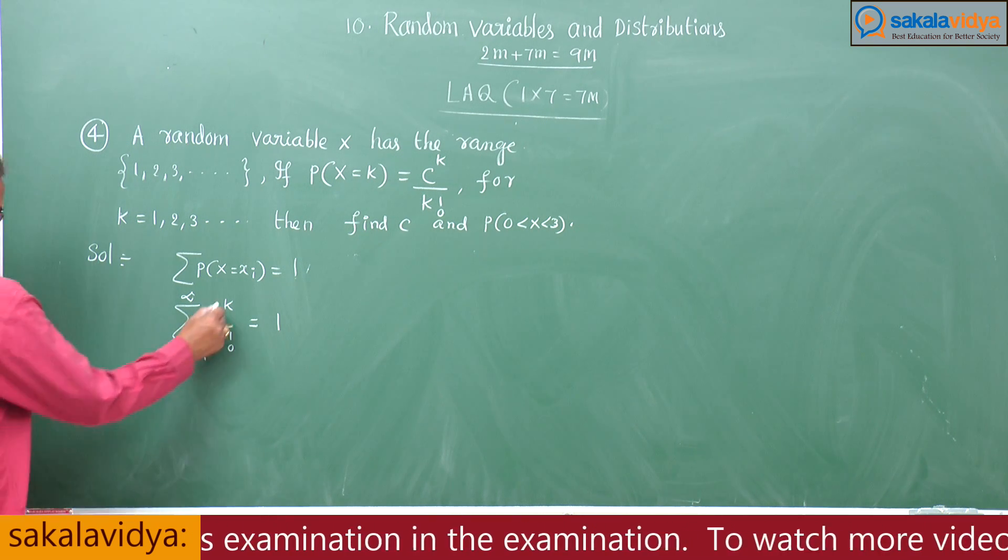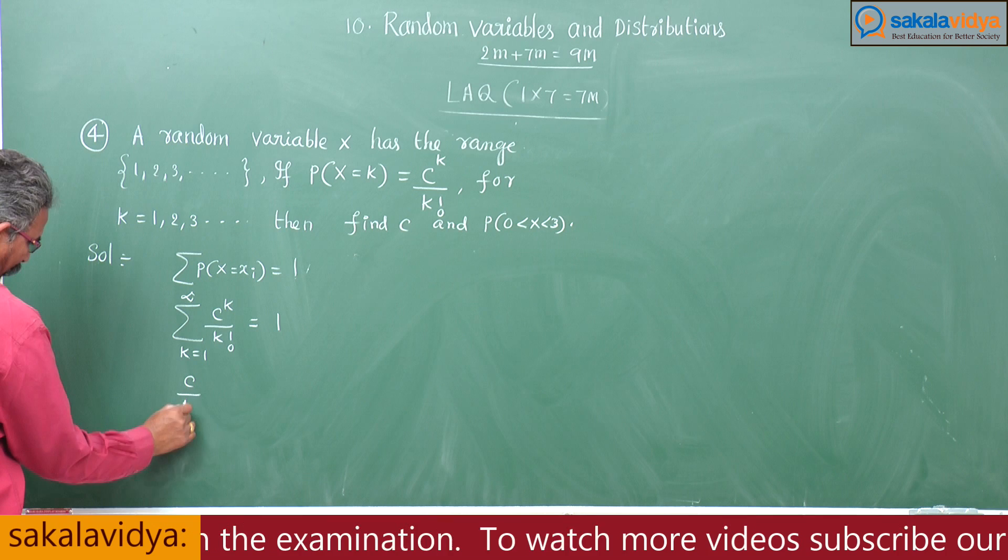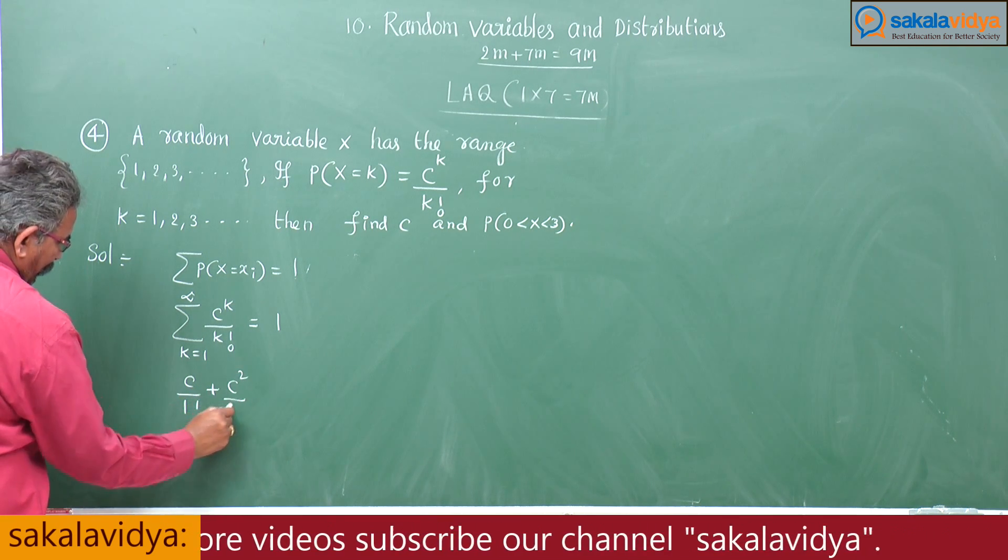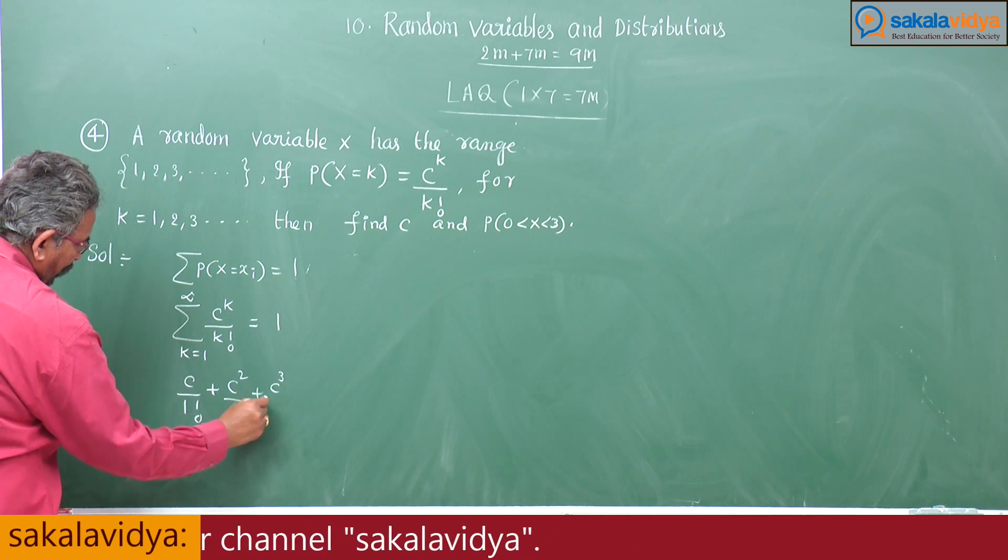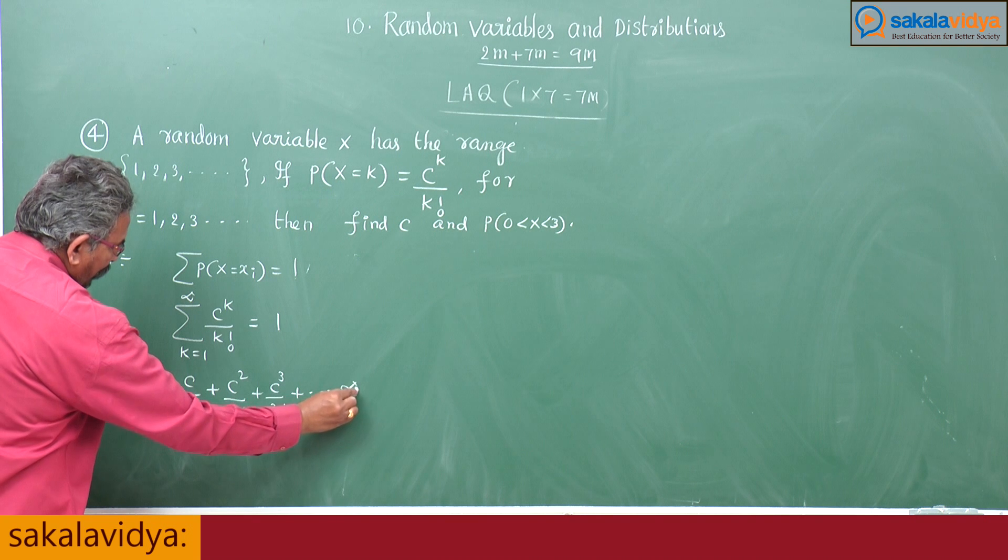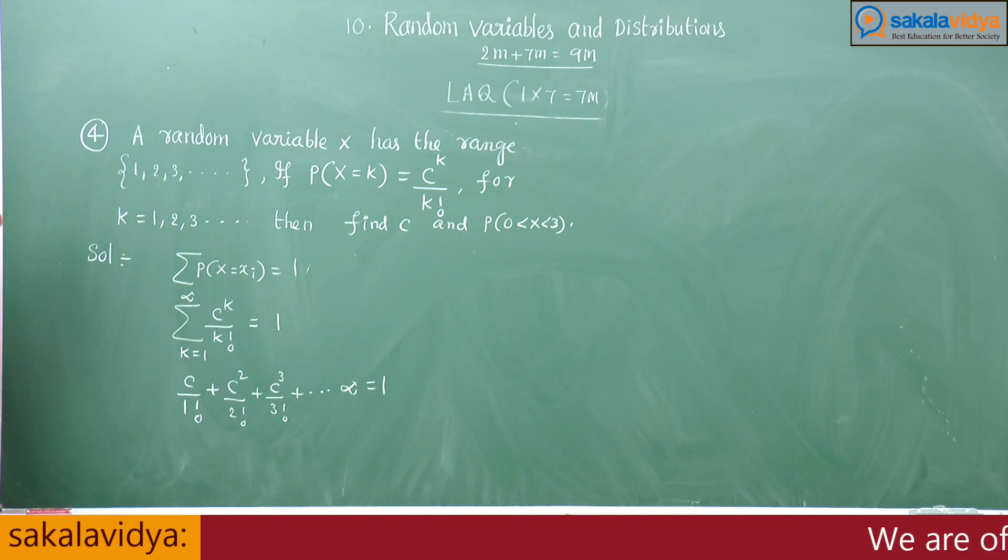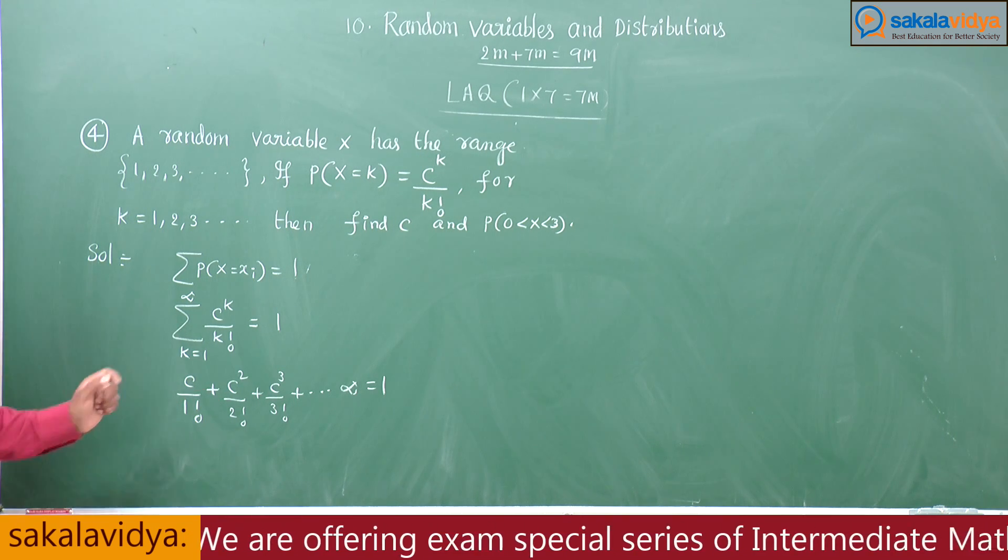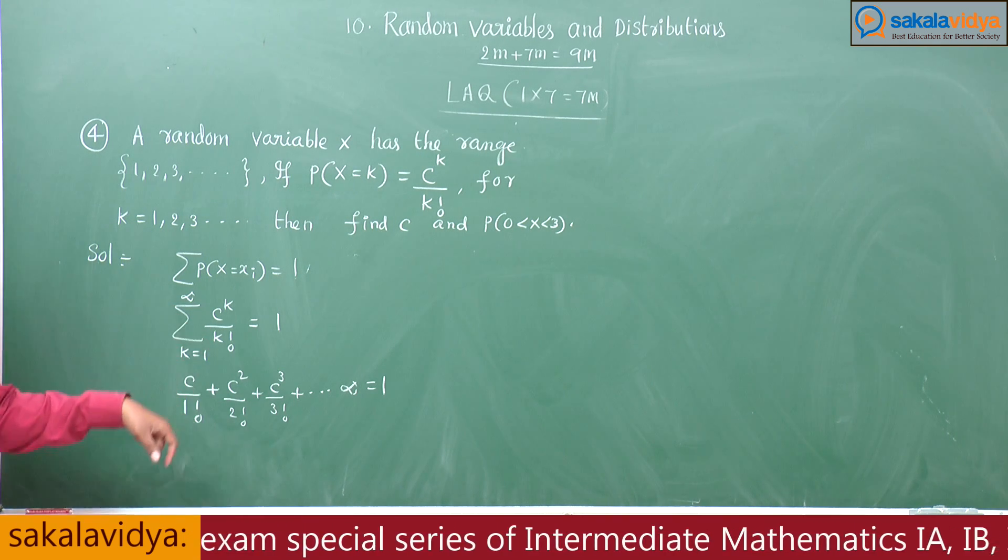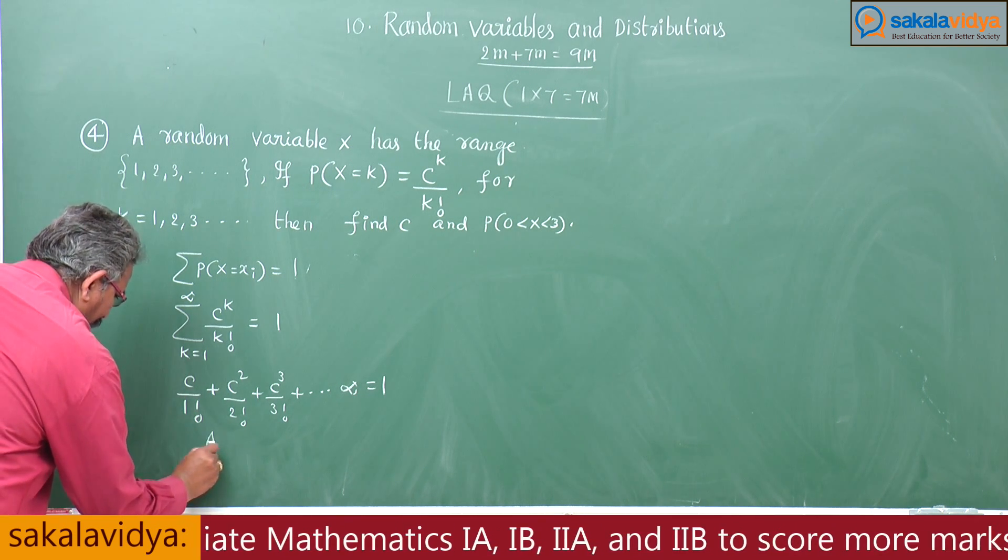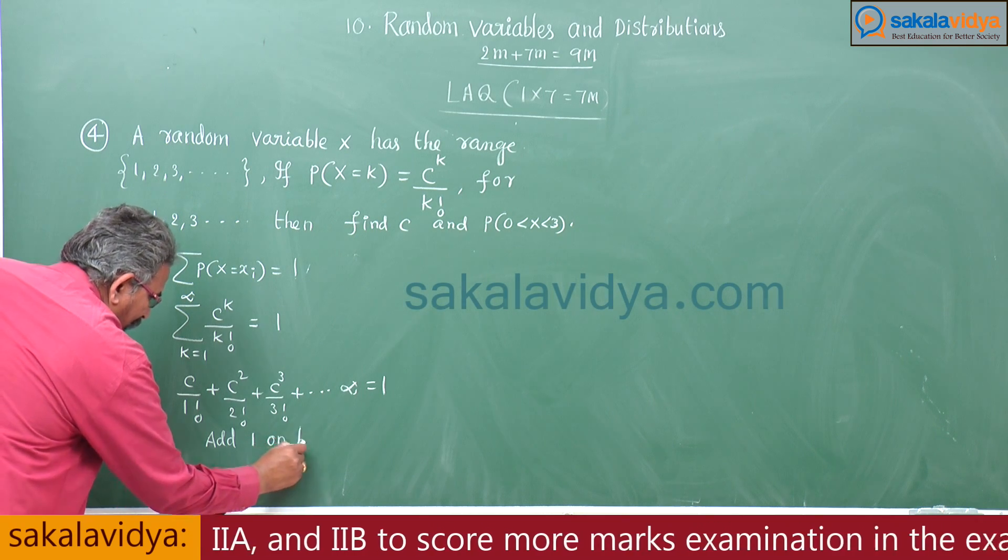Substituting c by 1 factorial plus c squared by 2 factorial, c cubed by 3 factorial and so on to infinity is equal to 1. So, it is an incomplete series. It appears to be exponential series. If you add 1 on both sides...